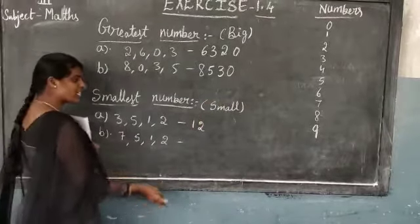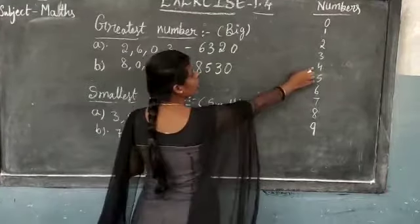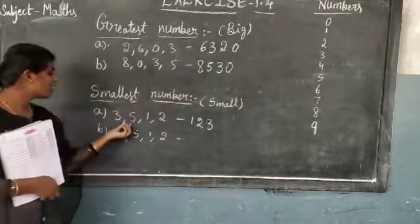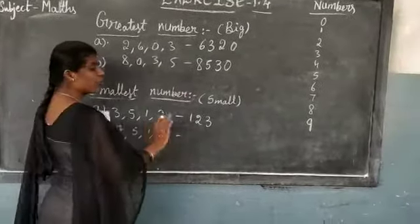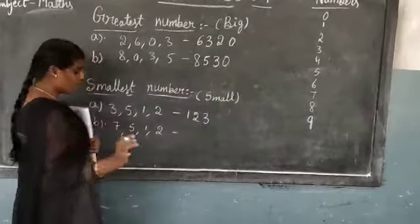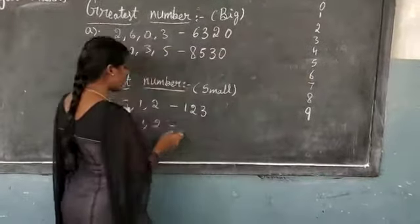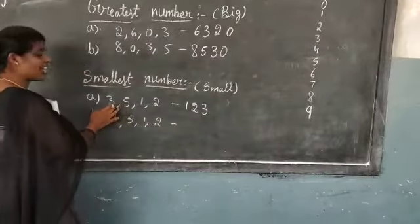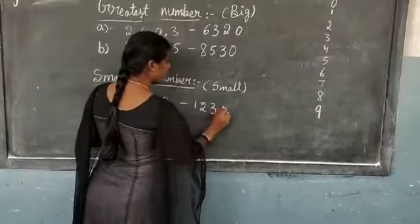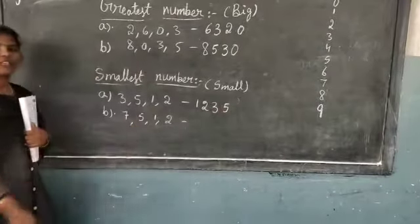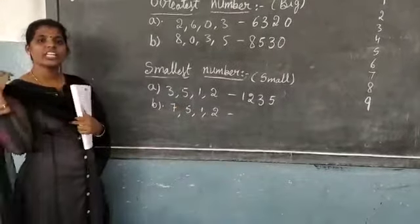Yes, 3 is there, children. Then you write 3. 3 after 4 — is 4 there? No, not given, then you don't write 4. Next, 4 after 5 — is 5 there? 5 is there, yes. Then you write 5. Total 4 digits. Is 6 there? No, over.